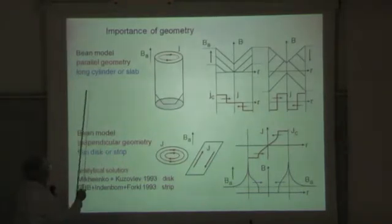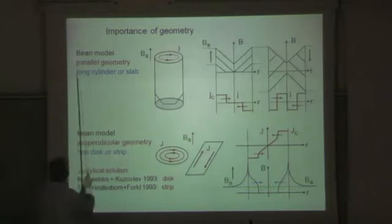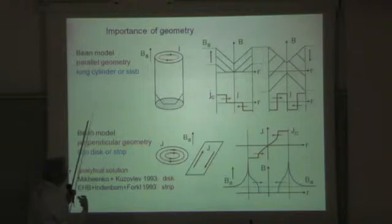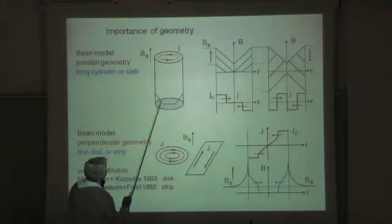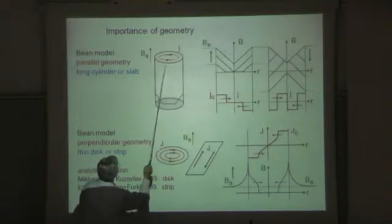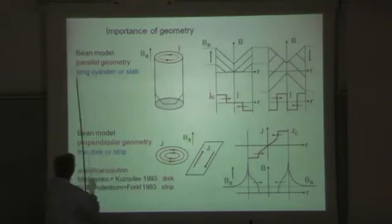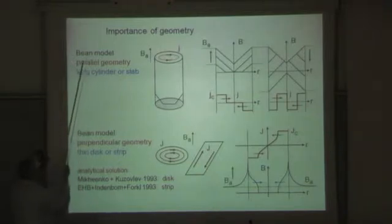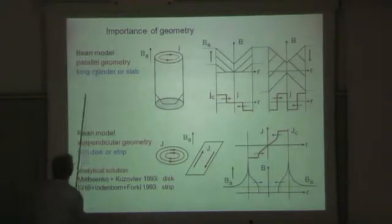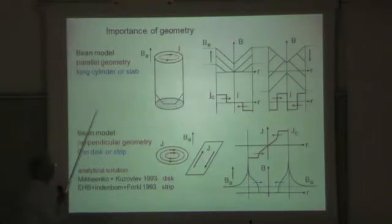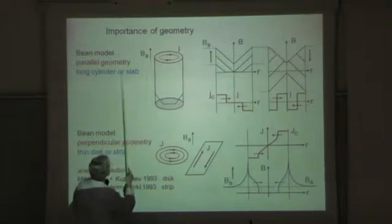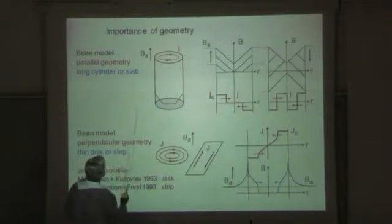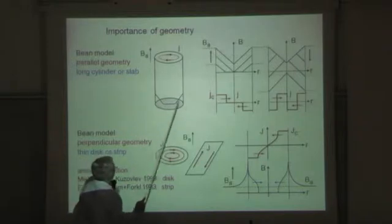Geometry is very important. Namely, there is a so-called Bean model. When you have a critical current density, then a very good approximation is to assume that the current inside the superconductor is either zero or has the value of Jc. This was proposed by Charles Bean in 1961 and is a very successful model. But it was considered first only for cases with no demagnetizing effect, say for long cylinders or long slabs.